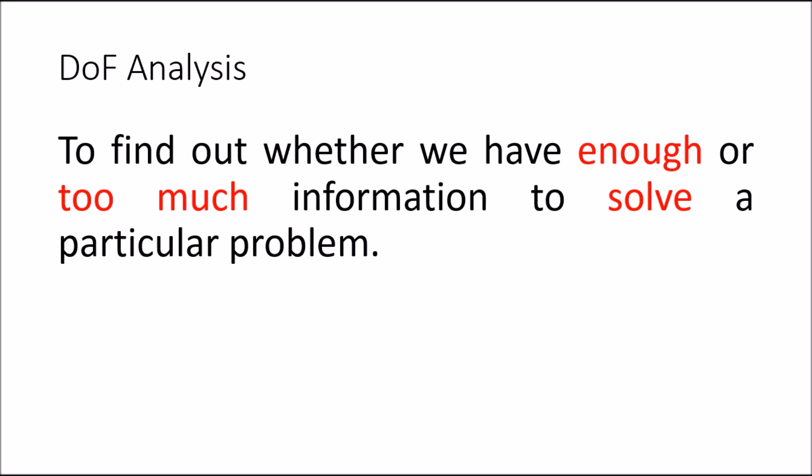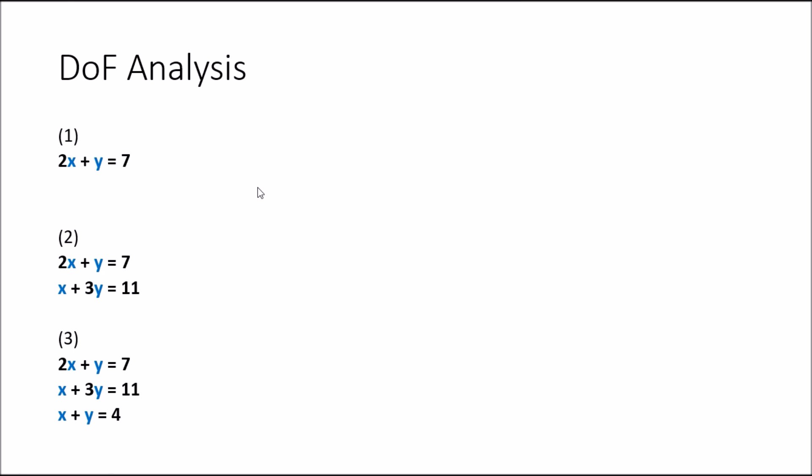We look at three different scenarios. In the first, we have one equation: 2x plus y is equal to 7. If we were asked to solve this problem, we know that we can because we only have one equation with two unknowns, so we could rearrange this however we want to solve for x or y, but we will never be able to solve for both of these variables. So in this case, when the number of unknowns is greater than the number of equations, we have an underspecified system.